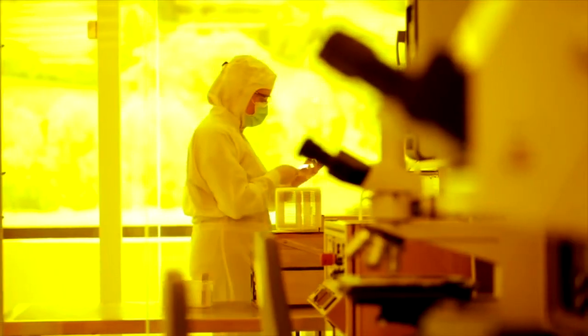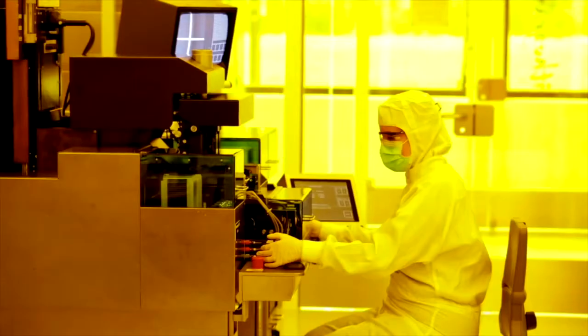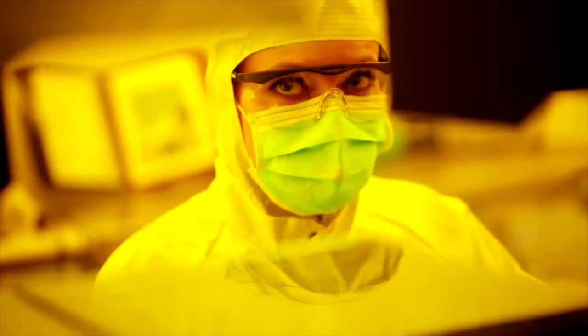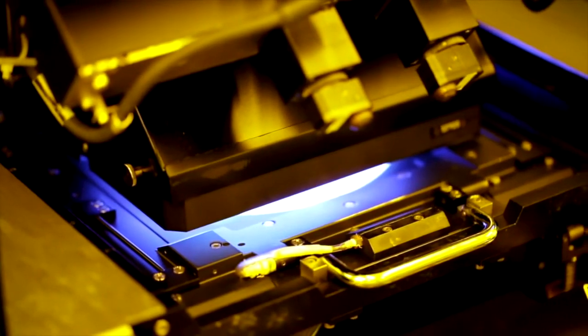The pattern of the sensor structure is defined by multiple steps: spin coating of a photosensitive resist, illumination of the photosensitive resist through a mask, developing the photoresist and etching the photoresist. Finally, the photoresist is removed, leaving only the sensor structure on the chip.